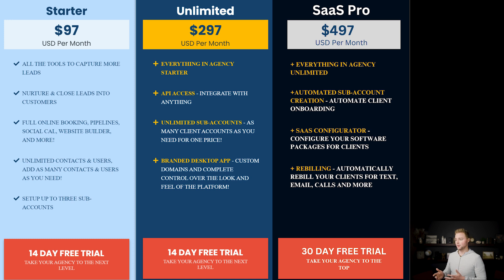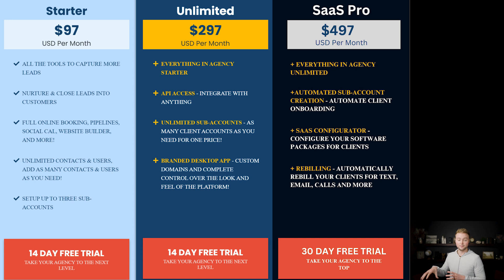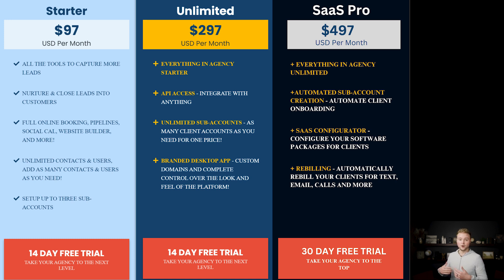And then we have our SaaS pro plan which is $497 USD per month. You get everything from your agency unlimited plan plus you can automate the sub account creation, meaning when a new client signs up for your white labeled software it'll automatically create their sub account and import the proper snapshot into that sub account. You really don't have to be there when you onboard your clients — it's done automatically.